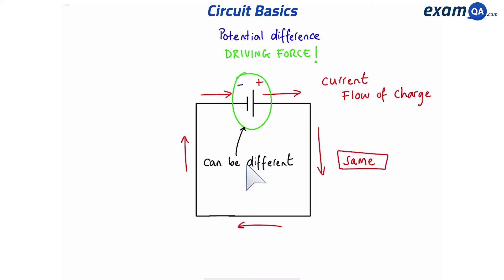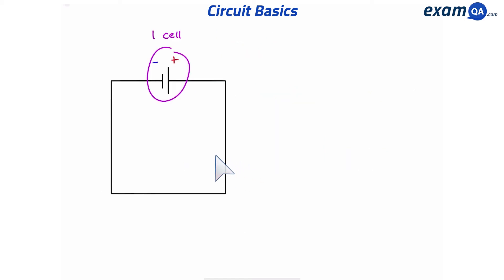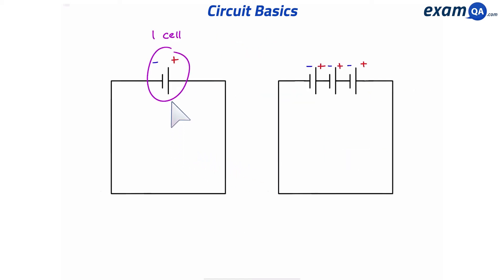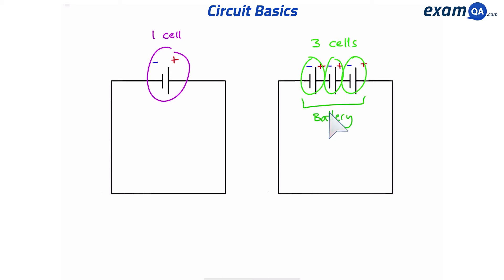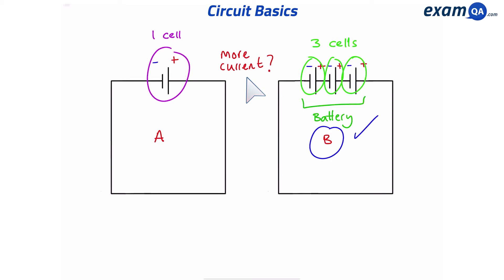Here I have a circuit with one cell. In this other circuit I have three cells joined together. When you have more than one cell joined together, that is called a battery. Which circuit will have a larger current — A or B? The answer is B, because more cells means a larger driving force and therefore more current.